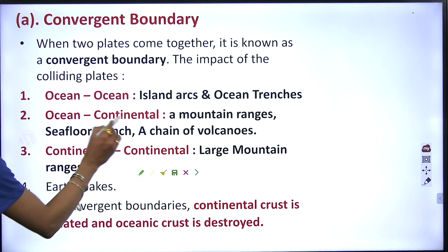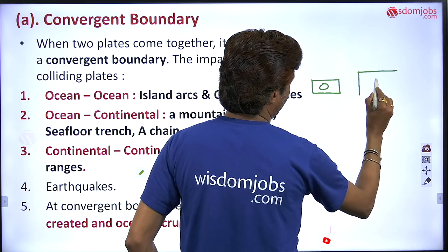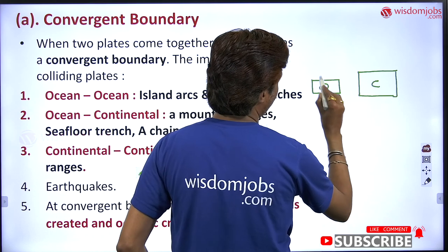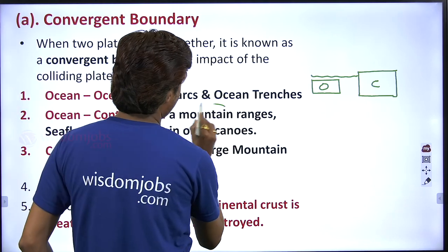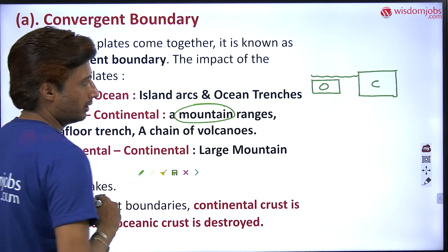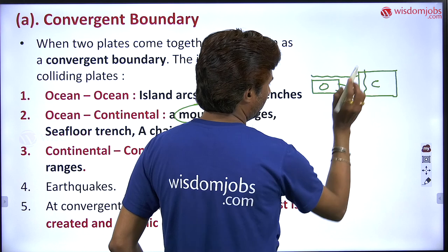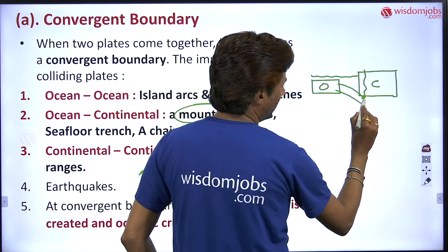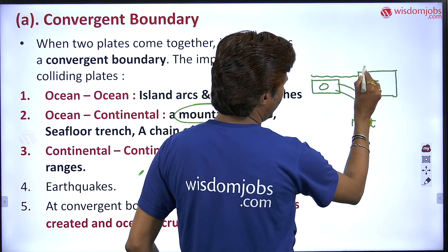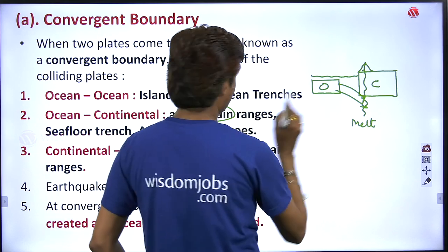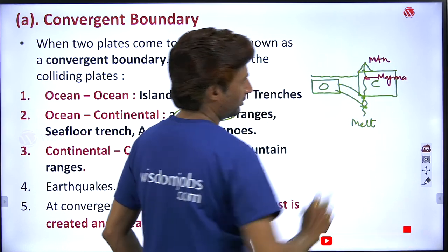Second: ocean and continental. This is oceanic plate and this is continental plate. Obviously, the continental plate will be thicker than the oceanic plate. Oceanic-continental collision results in mountain ranges. For example, the Andes. It is going to subduct again — volcanic mountain will be there, the oceanic material will melt, and then it comes out in the form of magma, forming a mountain. This is what magma — it is forming a mountain range. For example, the Andes.